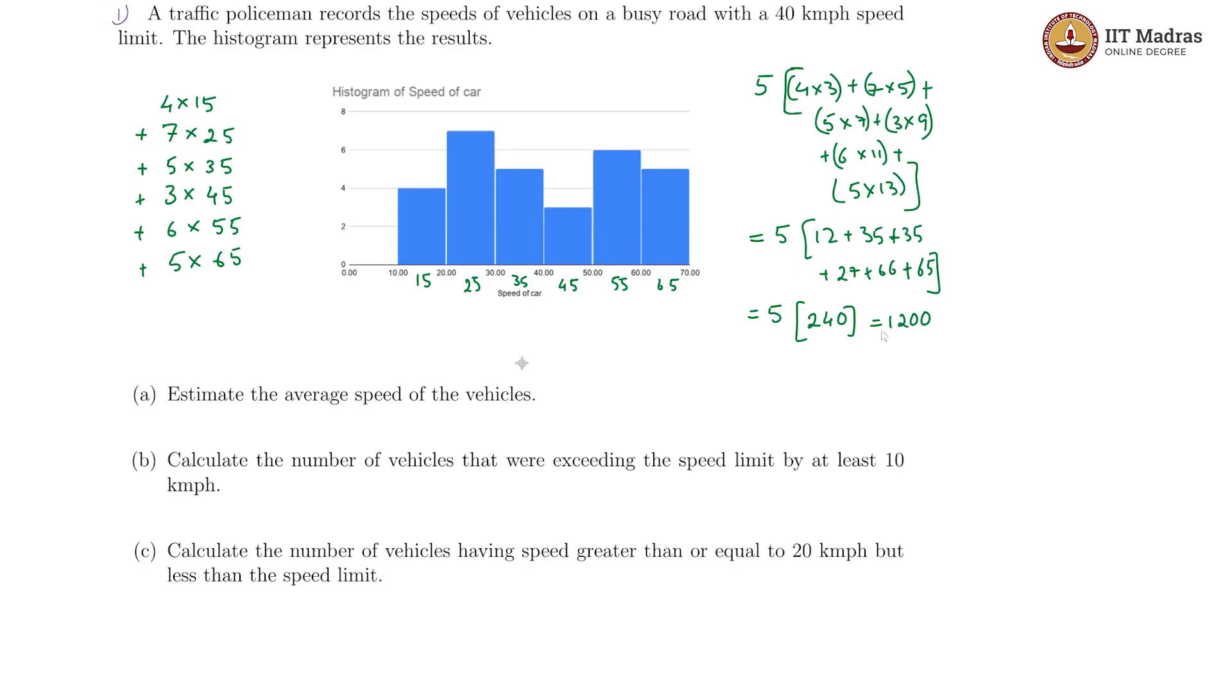This is the sum of observations. All of this put together, I will get 1200 divided by, now what is the total number of observations here? That would be these numbers, 4 plus 7 plus 5 plus 3 plus 6 plus 5.